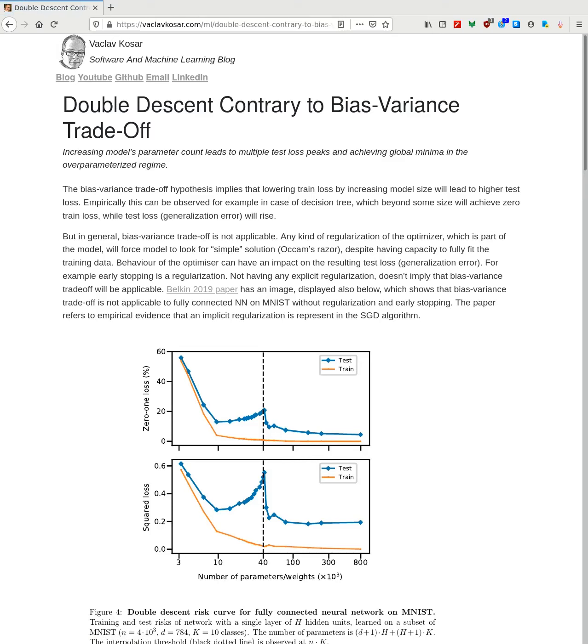The bias-variance trade-off hypothesis implies that lowering train loss by increasing the model size will lead to higher test loss. Empirically this can be observed, for example in the case of the decision tree, which beyond a certain size will achieve zero train loss, while the test loss will actually increase, the generalization error will rise.